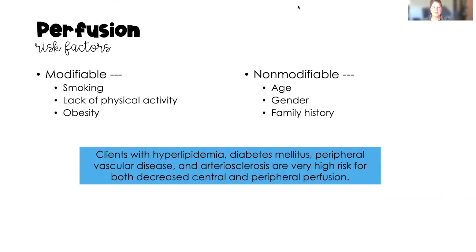When we think about modifiable risk factors — things we can change — we think about smoking, lack of physical exercise or a sedentary lifestyle, and obesity. On the non-modifiable side, things such as age: older adults are more prone to altered perfusion. Gender: males are more prone, especially to myocardial altered perfusion like heart attacks. And then family history plays a part as well.